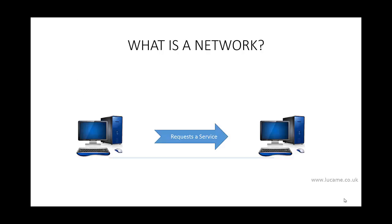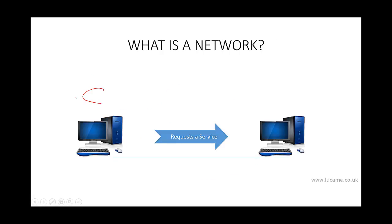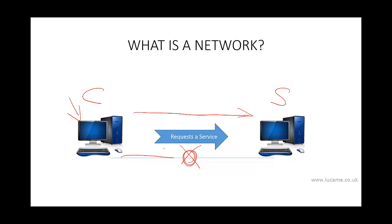In its simplest form, a network consists of two systems directly connected by a physical link, such as a cable or wireless channel, which allows them to communicate. A client application on one system would request a service — such as copying a file from a server. Most network systems are not directly connected to each other but make use of intermediate network devices such as hubs, routers, and switches.